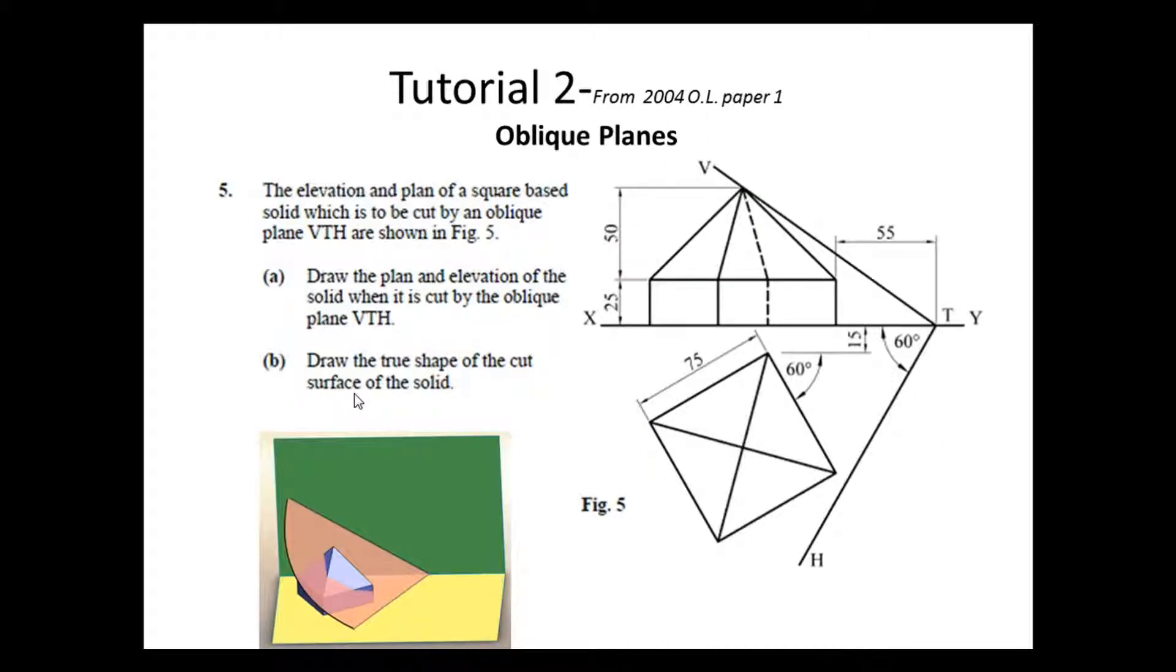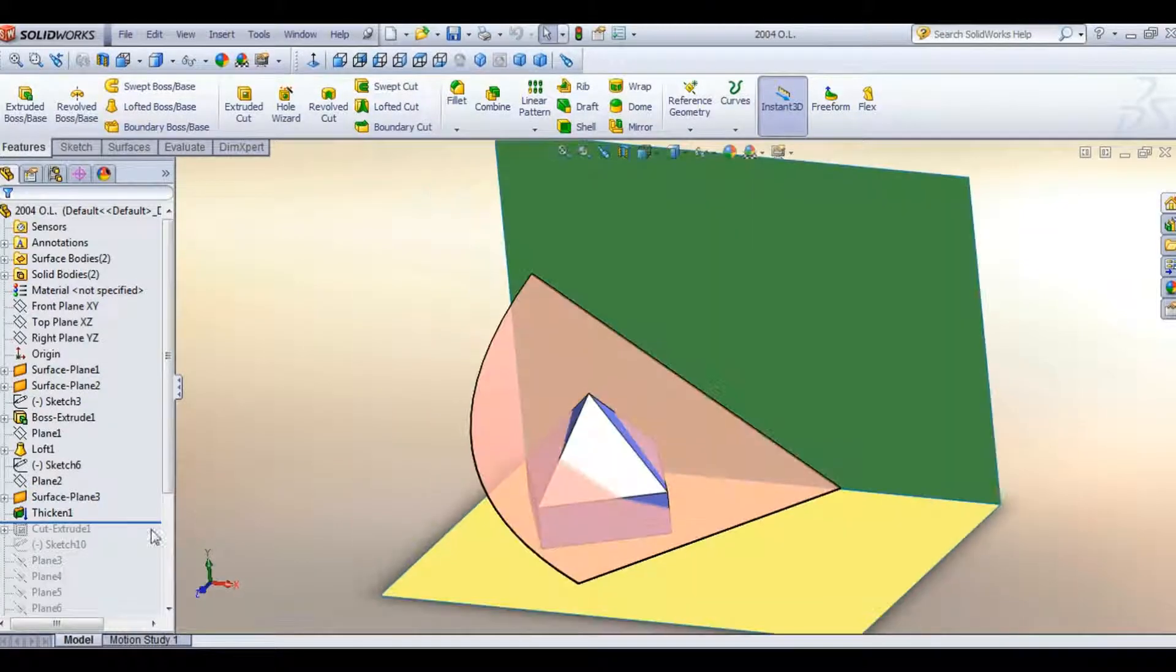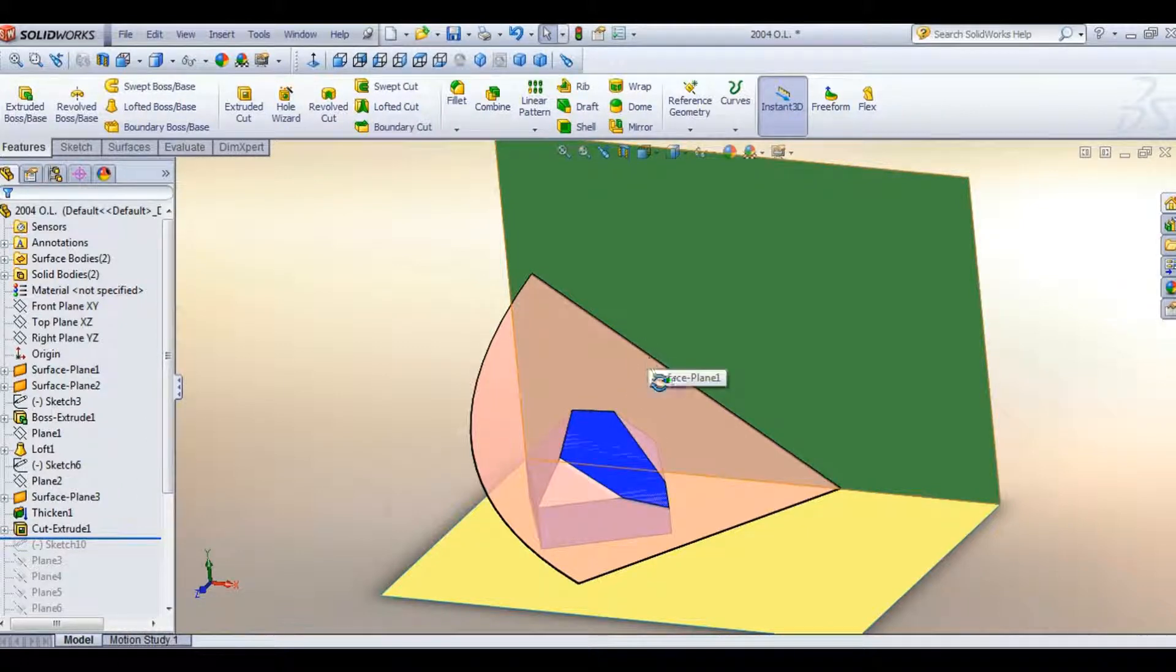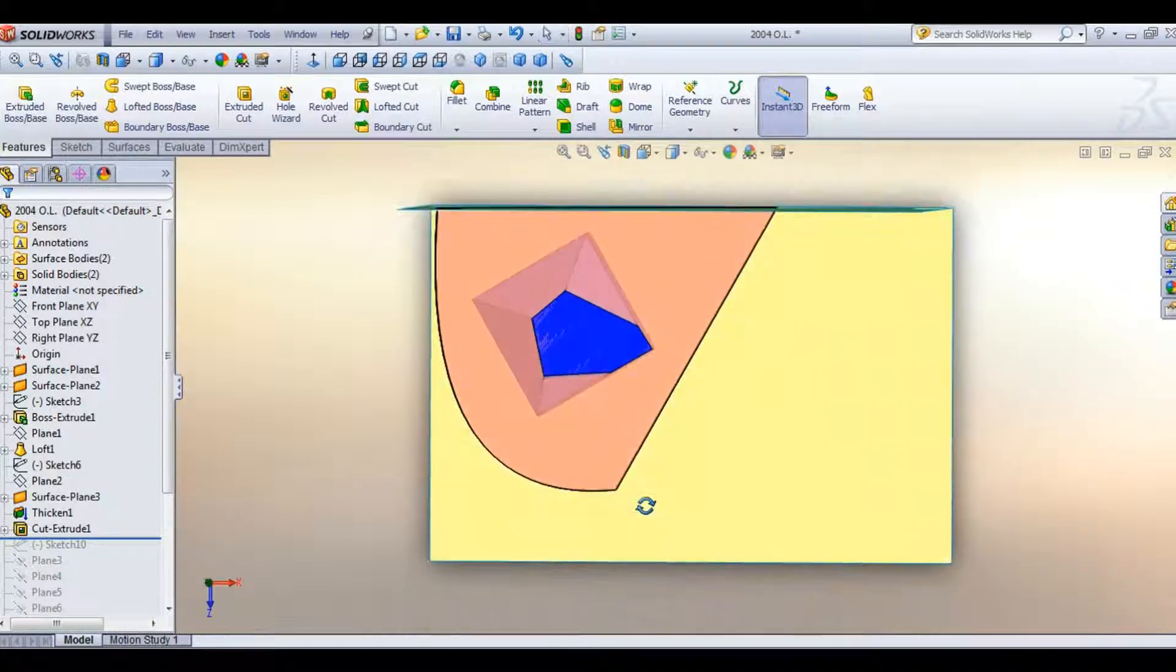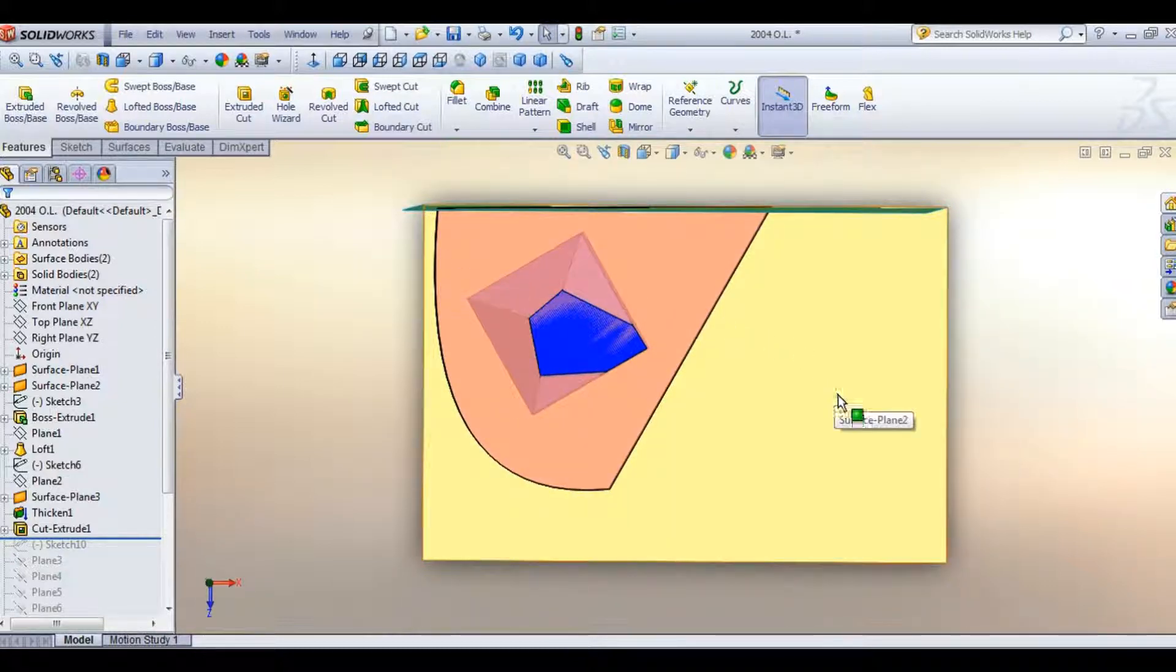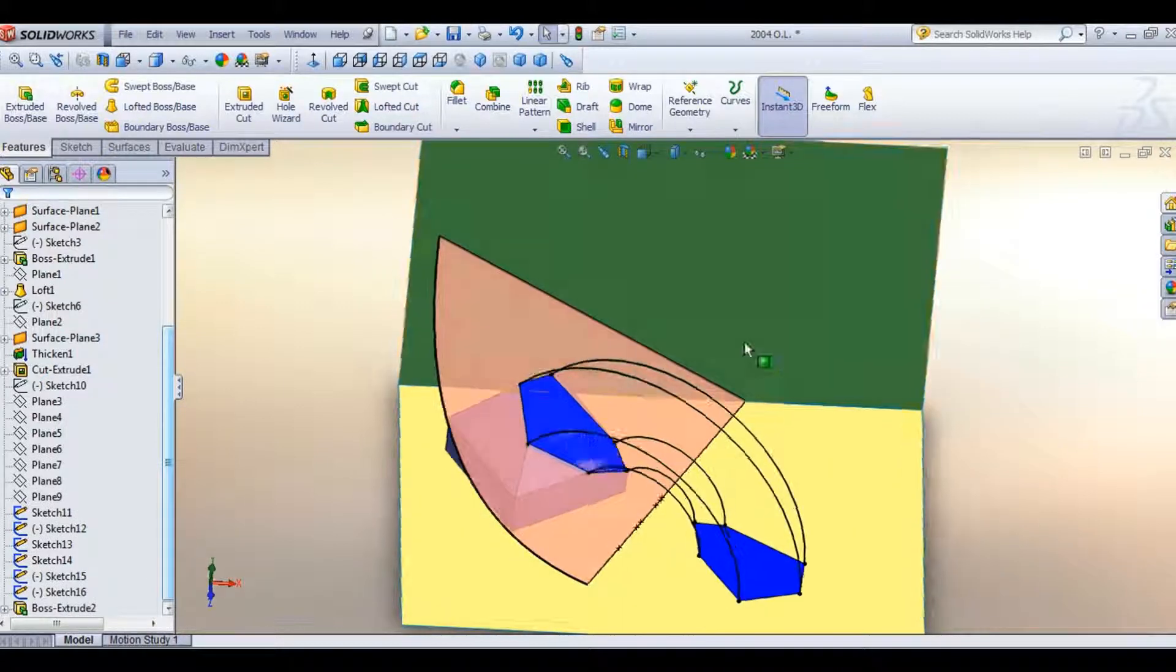Part B of the question asks you to draw the true shape of the cut surface of the solid. So what that means is you're going to find the true shape of this object when it's cut. To get that we're going to get this plane, and in plan we're going to flip it around so that we see the true shape where my mouse is here. And that'll look like so. Just flip it over.